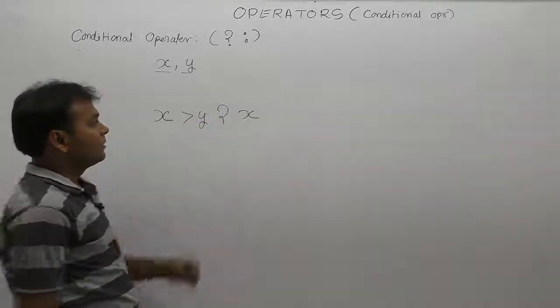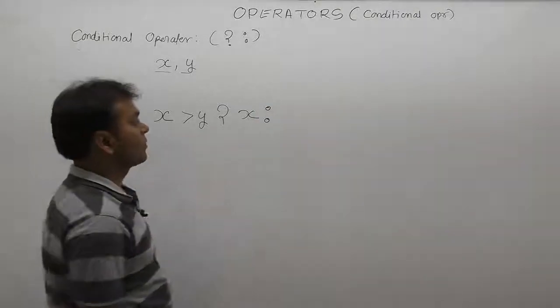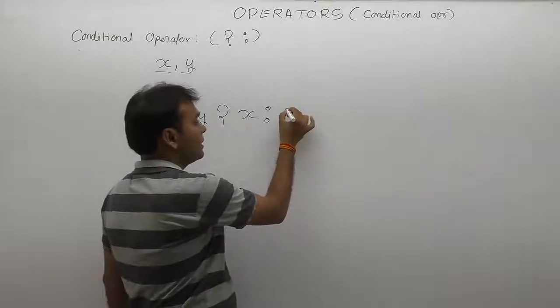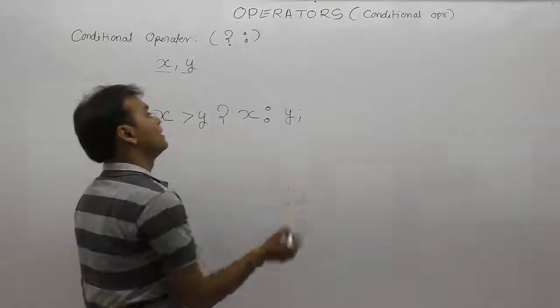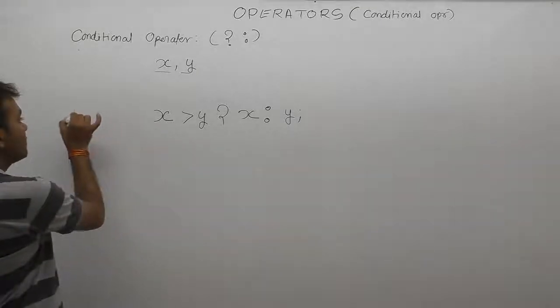The value can be displayed directly using printf with %d format specifier. This expression demonstrates how operations are performed based on conditions.